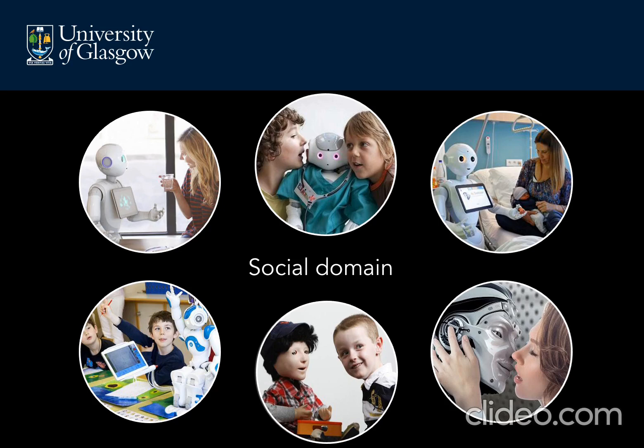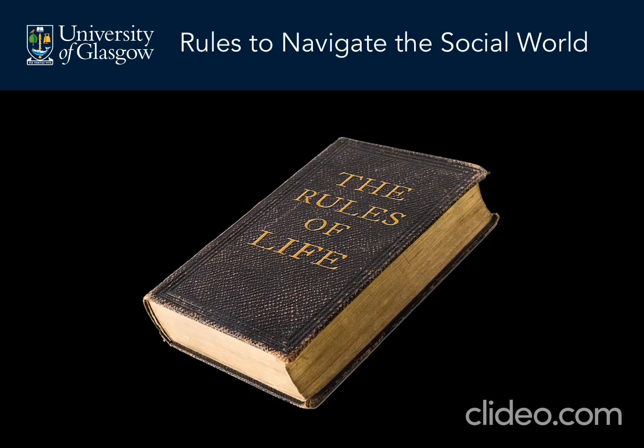For example, when training doctors how to deliver bad news, digital agents must be able to display emotions such as shock, anger and sadness. In other words, digital agents need a generative model of social signalling to successfully engage their human users and navigate their social world.